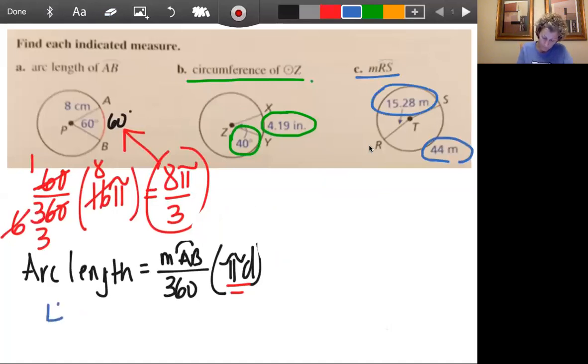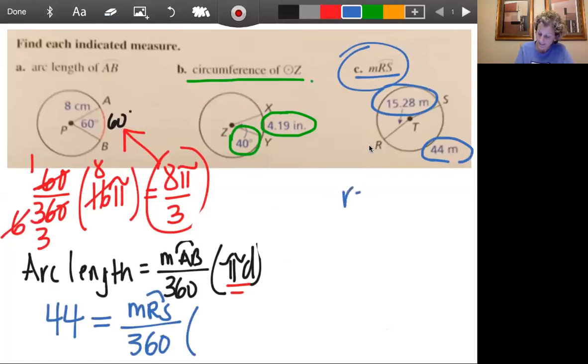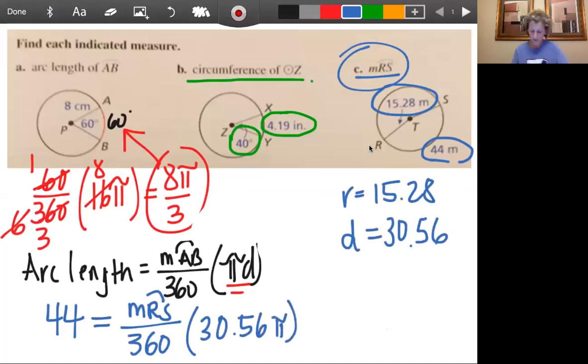We have 44 is our length and that's going to equal the measure of RS, that's what we're looking for, right? Over 360 times the circumference. It tells us that the radius is 15.28. That means that the diameter, we just have to double that. So we get 30.56. So this will be 30.56 pi. And then we just have to simplify.